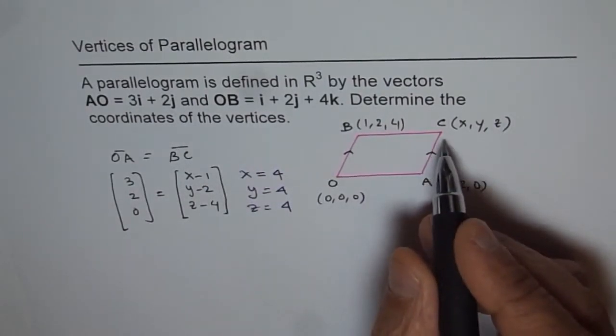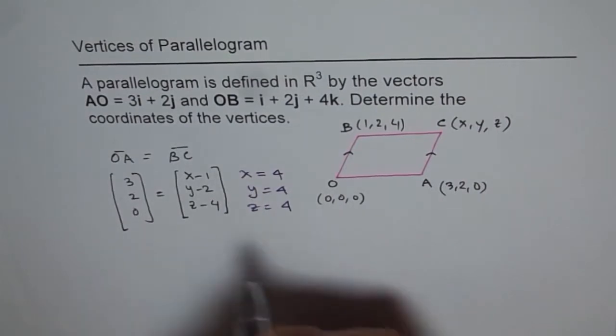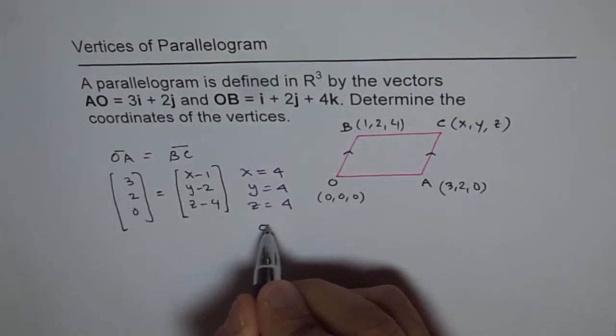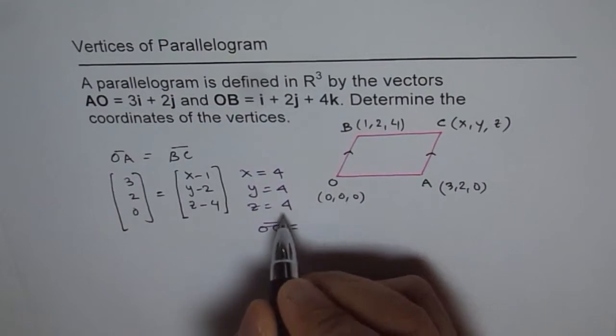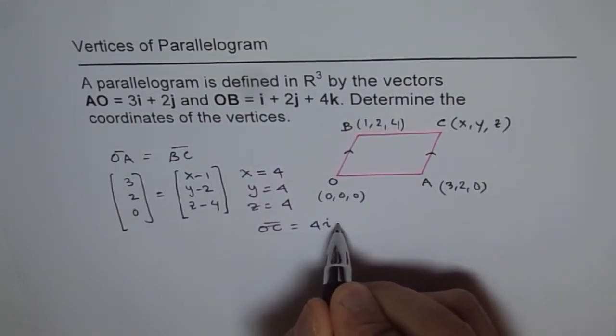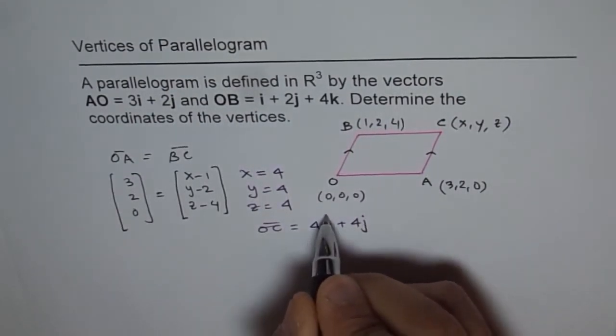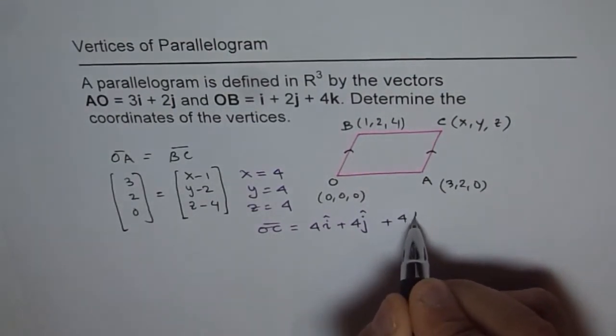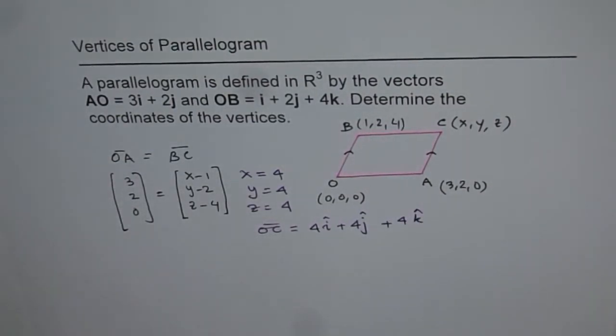So our point C is, let's write OC equals 4i + 4j + 4k. These are unit vectors. That is our answer for the given question. Thank you.